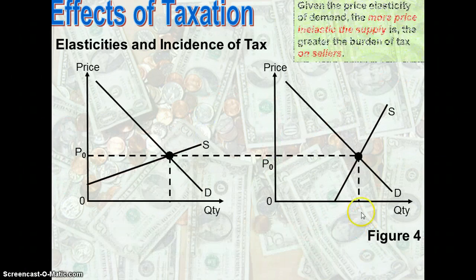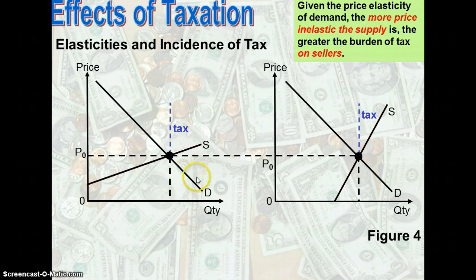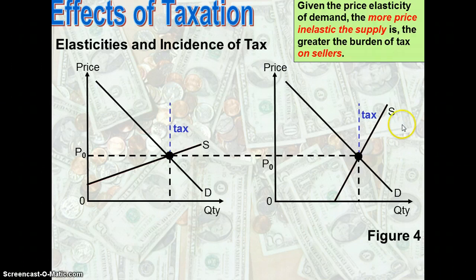Now let's look at the next case: given the price elasticity of demand, the more price inelastic the supply is, the greater the burden of tax on the sellers. Both diagrams have the same demand curve, but the supply curve is relatively gentle (more elastic) on the left-hand side, while on the right-hand side the supply curve is relatively much steeper, indicating that supply is more price inelastic.